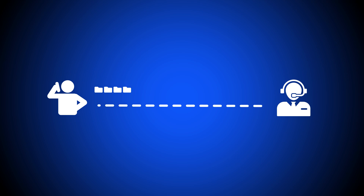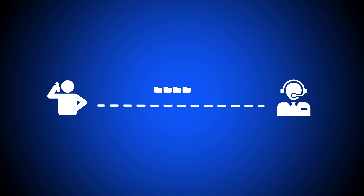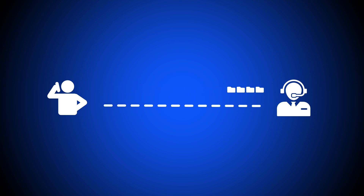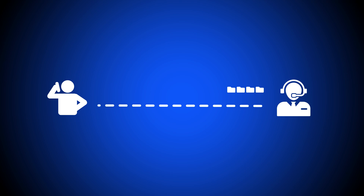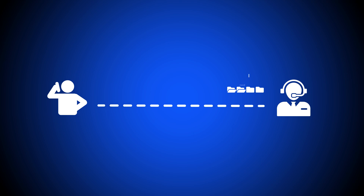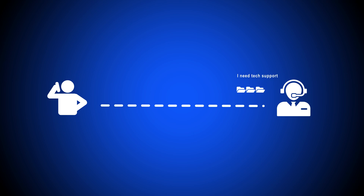These digital data packets then travel to the destination — the call recipient's phone line — via a broadband internet connection. Once they've arrived at their destination, the digital data packets reassemble and reorder themselves, delivering HD voice audio to the person you're calling.